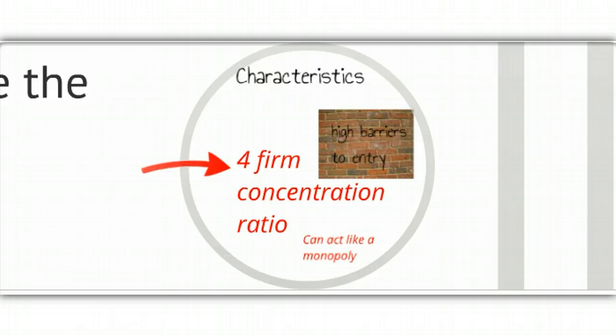Some economists use something called a four-firm concentration ratio to figure out if the industry really is an oligopoly. What that is, you take the top four firms and you add up their market share. If it adds up to more than 40 percent, it's an oligopoly.